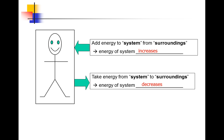A system can be anything. It can be something as simple as a chemical reaction, something more complex like the human body, or even more complex, like a lake or a piece of the atmosphere. The surroundings is everything else apart from the system. So in thermodynamics, when we talk about transfer of energy, we mean transferring energy from the system to the surroundings or the other way around.